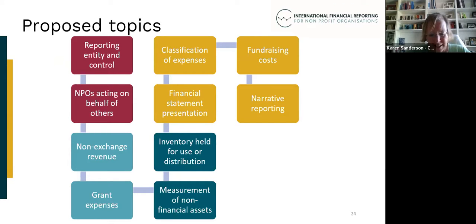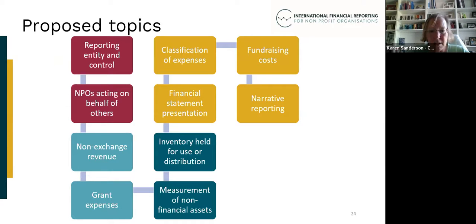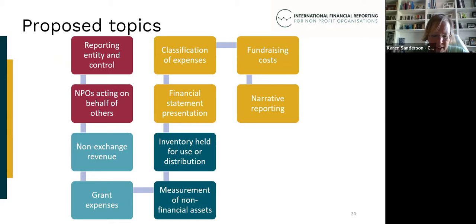We've identified these 10 issues because they are prevalent, there are consequences for readers if they are not addressed, there is demand globally, and we think we can address them within project resources. But the consultation paper seeks views on whether we've actually prioritised the right ones, which will be really important for how we take the work forward.